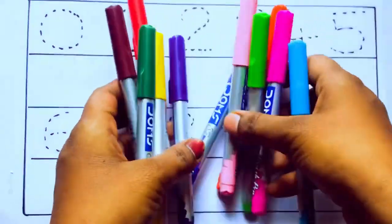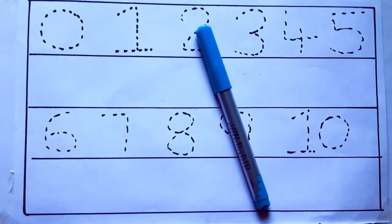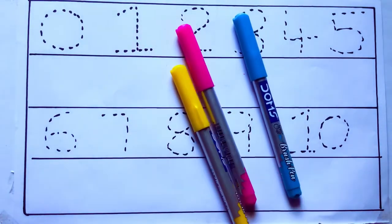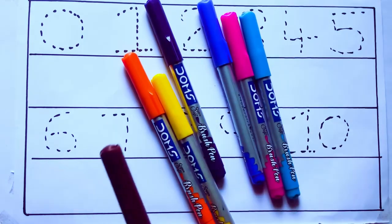Let's learn some colors. These are all the color pencils. Let's learn the names: sky blue color, pink color, yellow color, orange color, violet color, blue color.